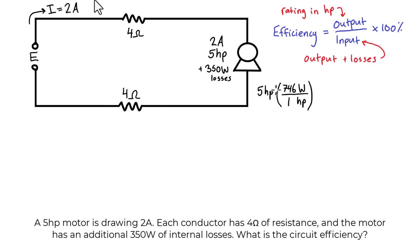Basically, when you see horsepower, you can just multiply it by 746. These units are going to cancel out and we're going to be left with 3730 watts. So this is our output. And this is basically going to be the numerator in our efficiency calculation.